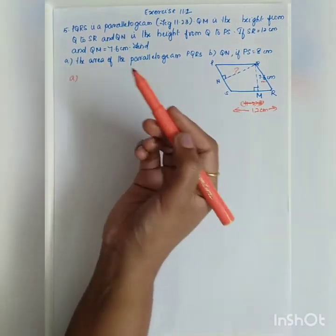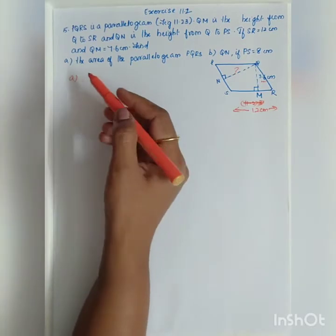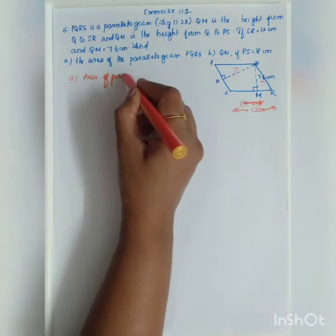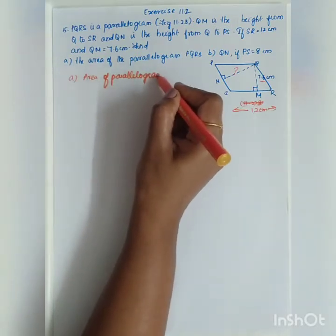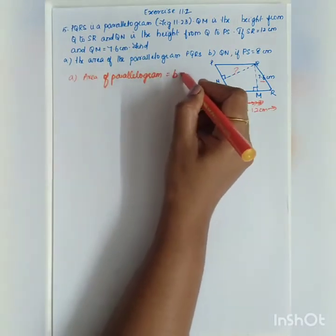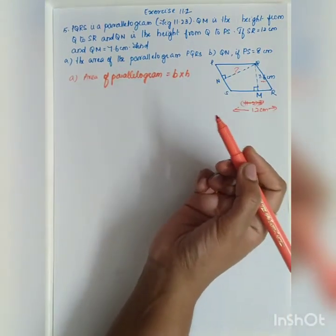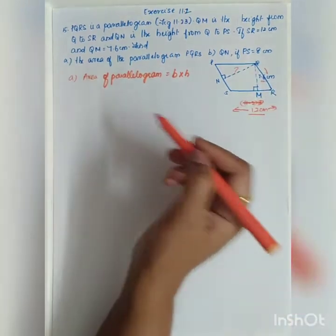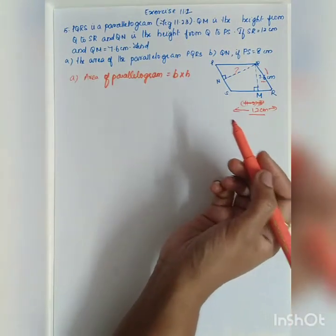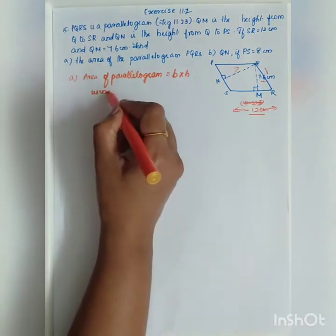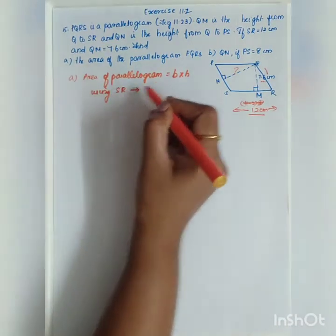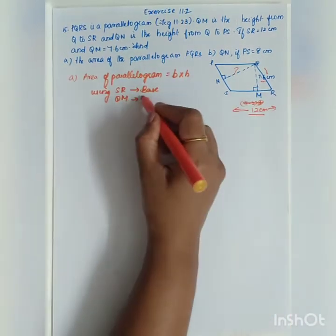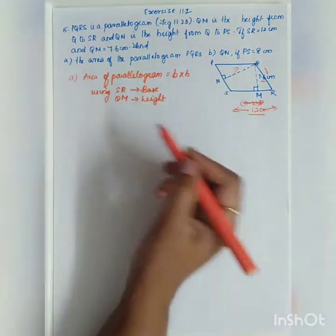Let us take the first option, the area of the parallelogram. Area of parallelogram is equal to base into height. Because here base is given, height is given, let us take the area of the parallelogram using SR as base and QM as height.